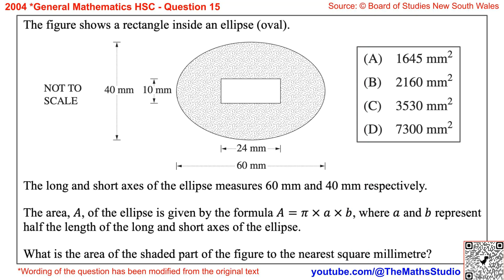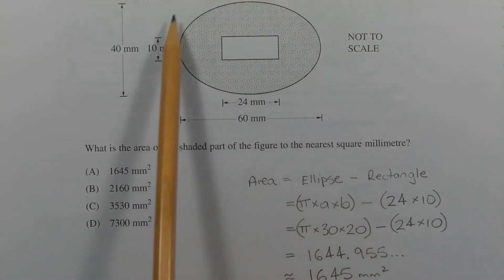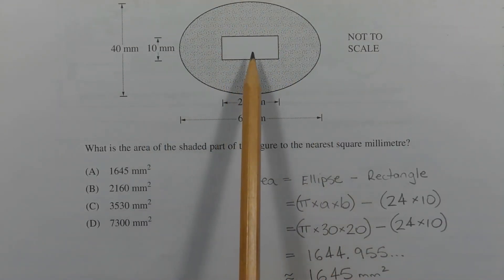What is the area of the shaded part of the figure to the nearest square millimetre? The area of the shaded part of the figure is the difference between the area of the ellipse and the area of the rectangle in the centre.